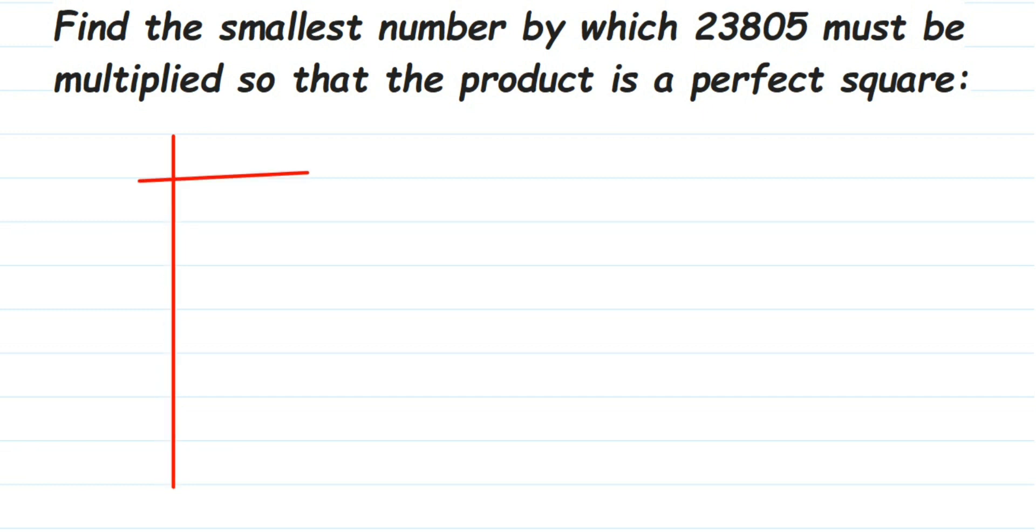This number 23,805 is an odd number, so we're going to start with three. We're going to check if this number is divisible by three or not. So let's divide this.